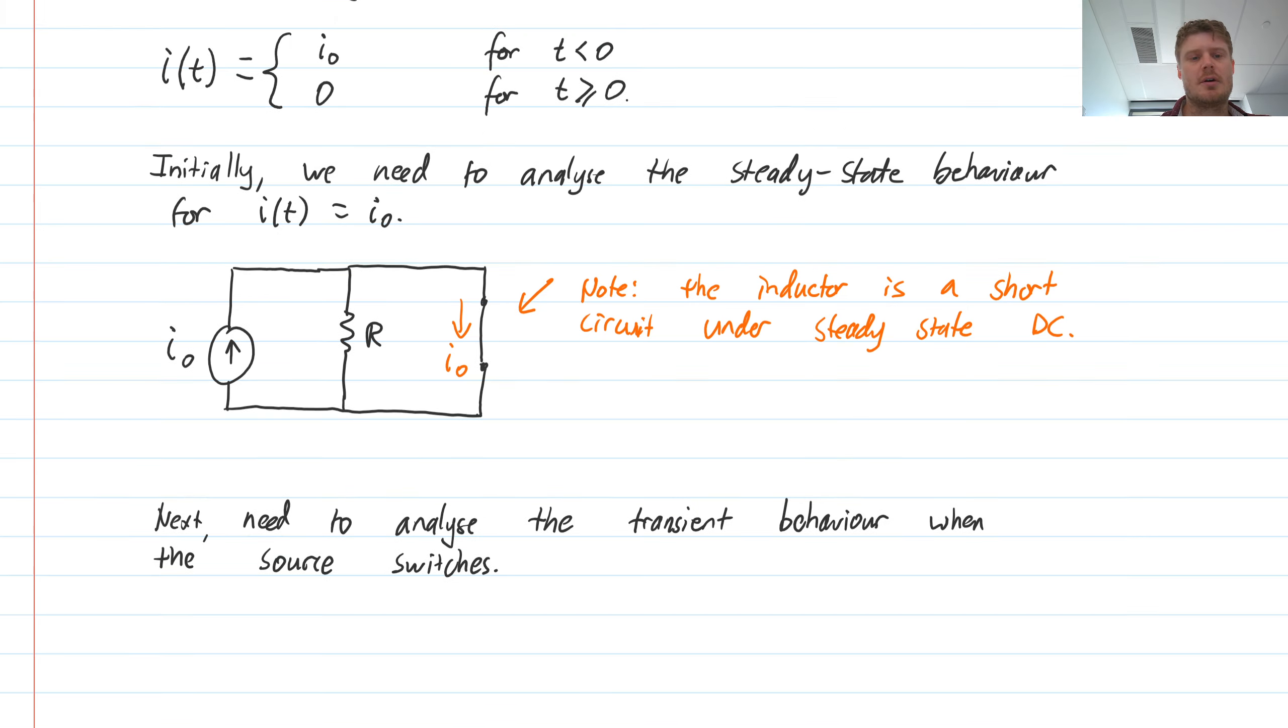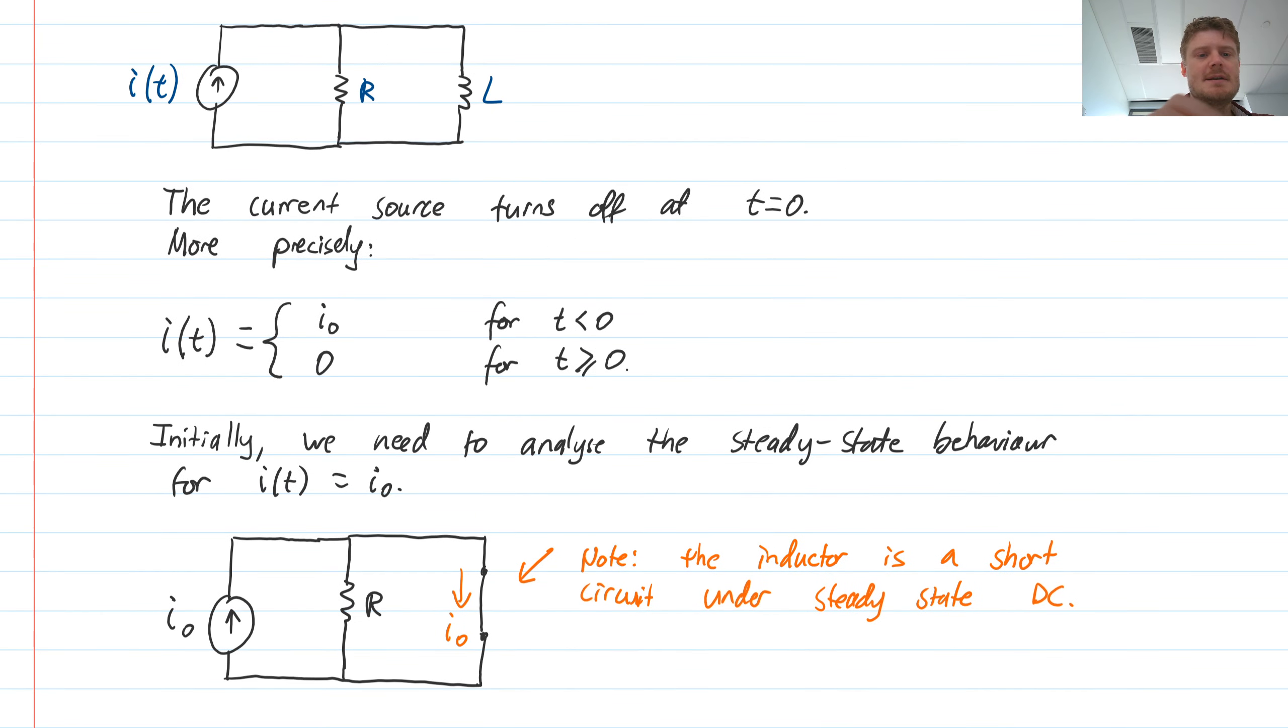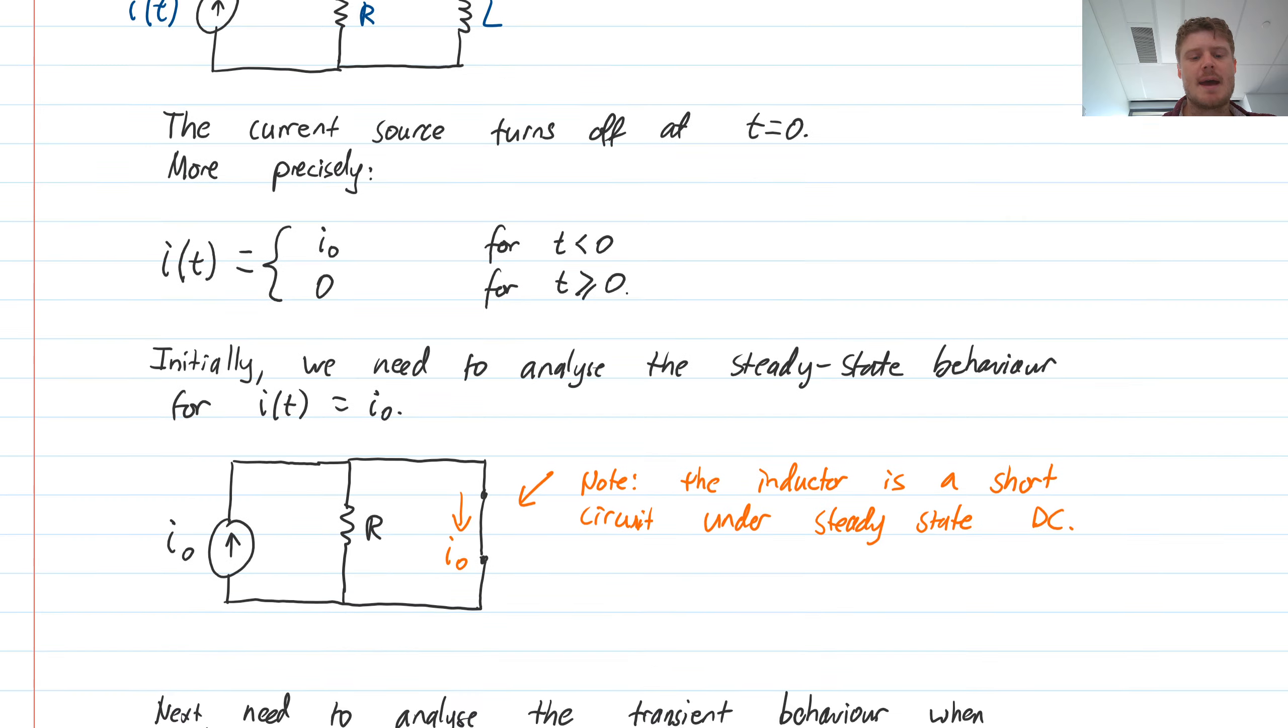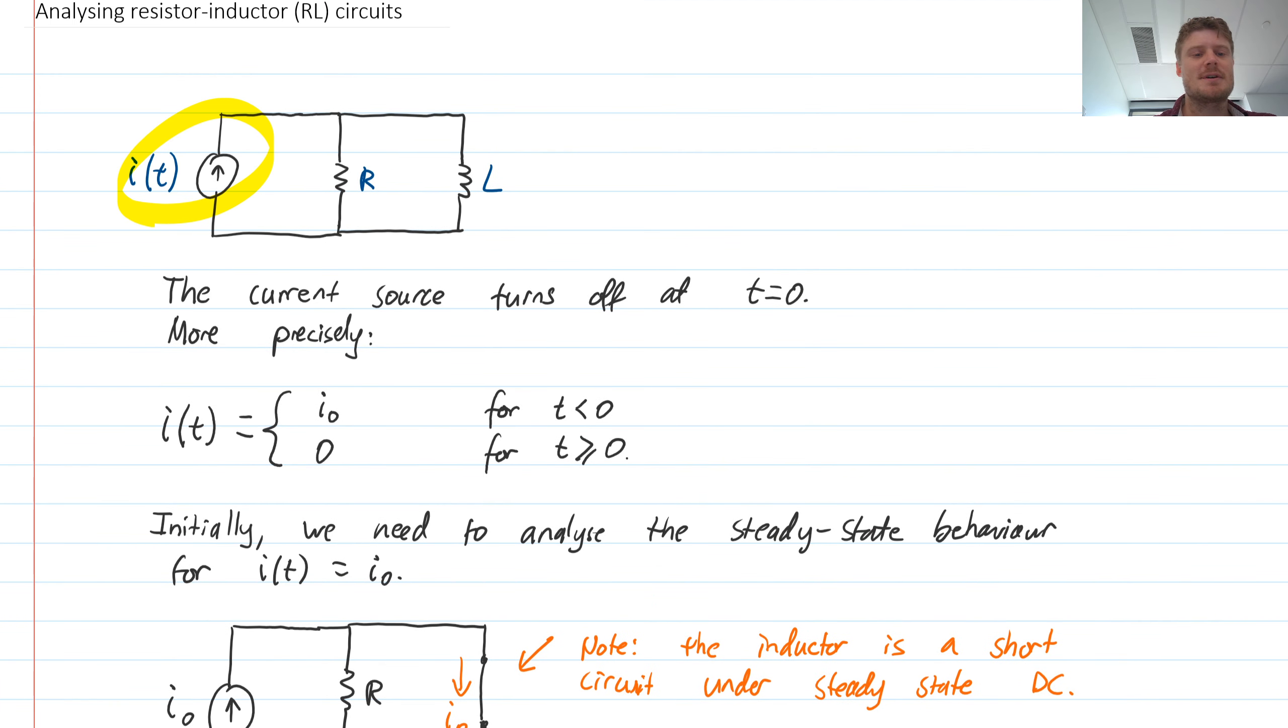So when the source switches off, it's defined in our problem statement as being zero amps of current will flow. So if you have zero amps, then you have an open circuit. No current means that that part is disconnected. So open circuit on that side.